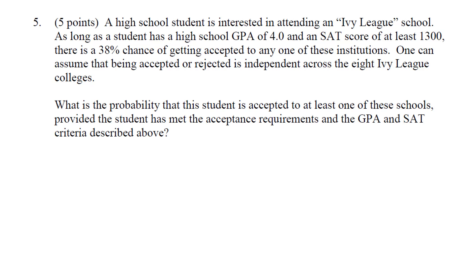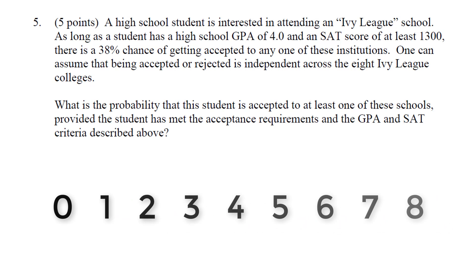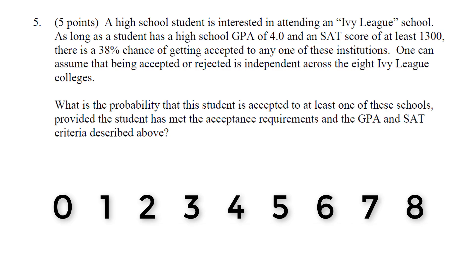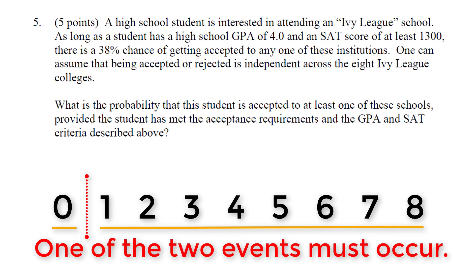In this question we are looking for the probability that a student is accepted to at least one Ivy League school. The way I solve these questions is to write a number line with 0, 1 through 8. When a student applies to 8 Ivy League schools, they could get accepted to 0, 1, 2, 3, 4, 5, 6, 7, or 8. Looking at this number line, they could get accepted to 0 or they could get accepted to 1 or more. These are disjoint events and also complements of each other — if you get accepted to 0 you can't get accepted to 1 or more, and vice versa.